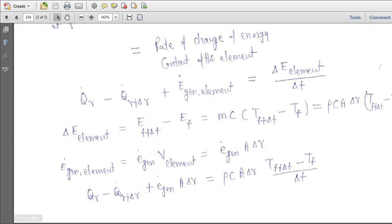We get Q̇_R minus Q̇_(R+ΔR) plus Ė_gen times A·ΔR equals ρc_p·A·ΔR times [T(t+Δt) minus T(t)] divided by Δt.